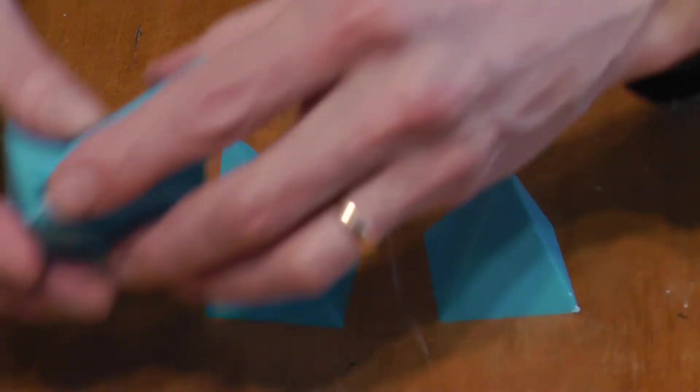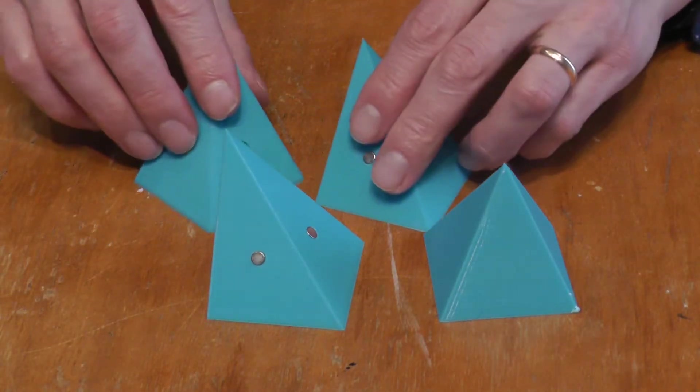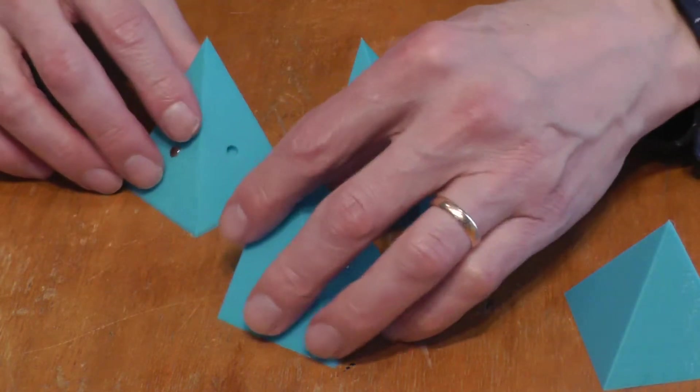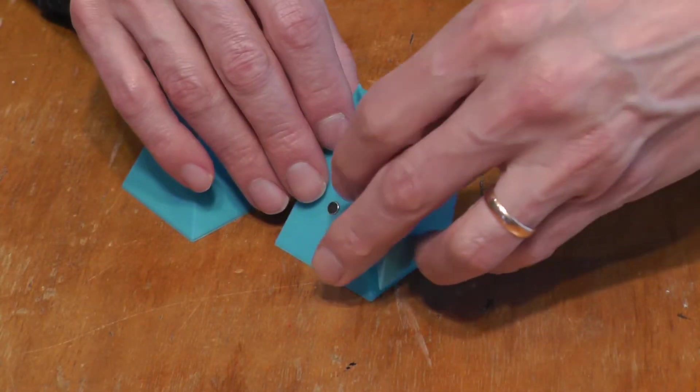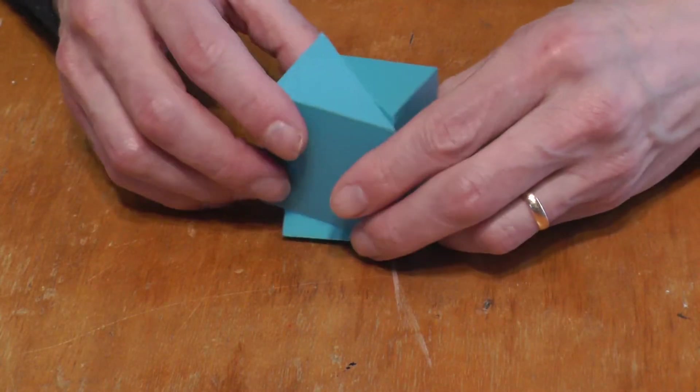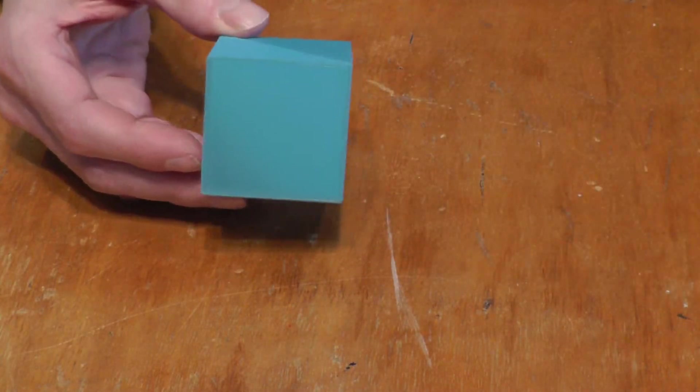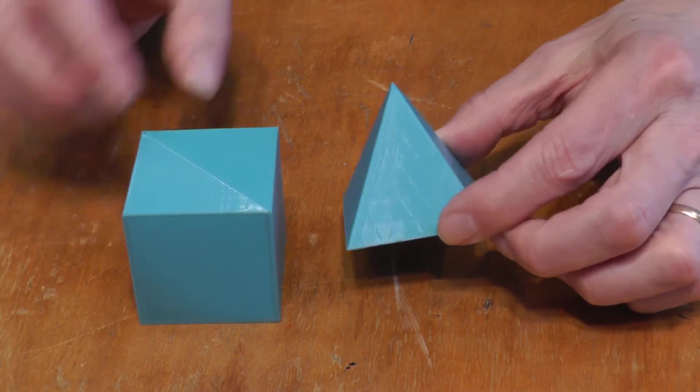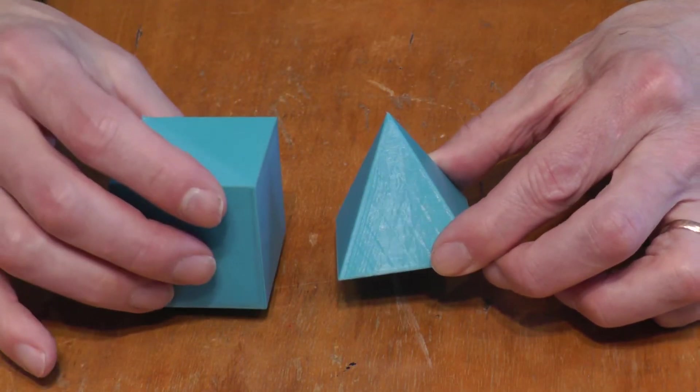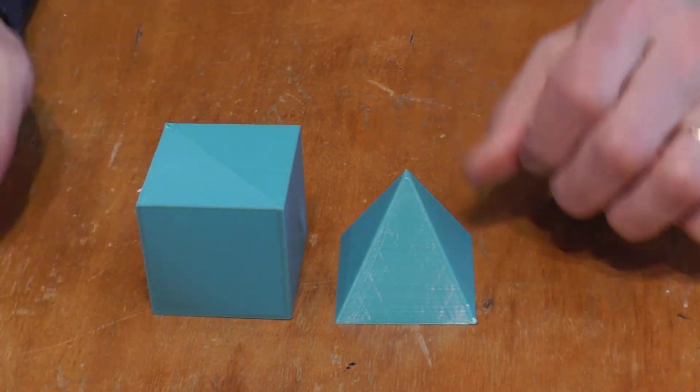So if I take three of these pieces, three of these, I'll have the same volume as this, and put them together, they form a cube. So this cube is three times the volume of this, or in other words, this pyramid is one-third the volume of the prism with the same base and the same height.